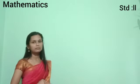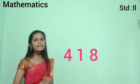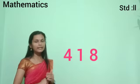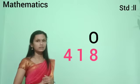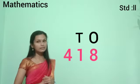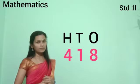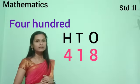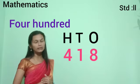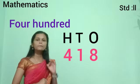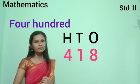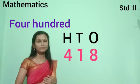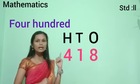Now another example: 418. Here also, we write the place value. 8 is in the place of 1's, 1 is in the place of 10's, and 4 is in the place of 100's. Now we write the number name: four hundred, then 10's and 1's taken together — 1 and 8 together make 18, which we have already studied. So the number name of 418 is four hundred eighteen. Is it clear?